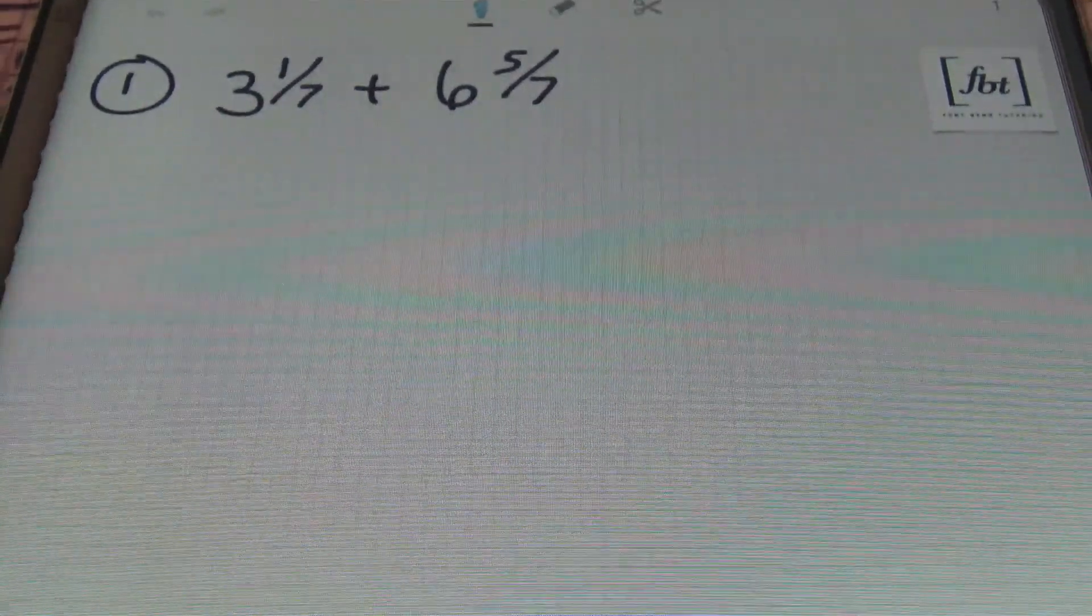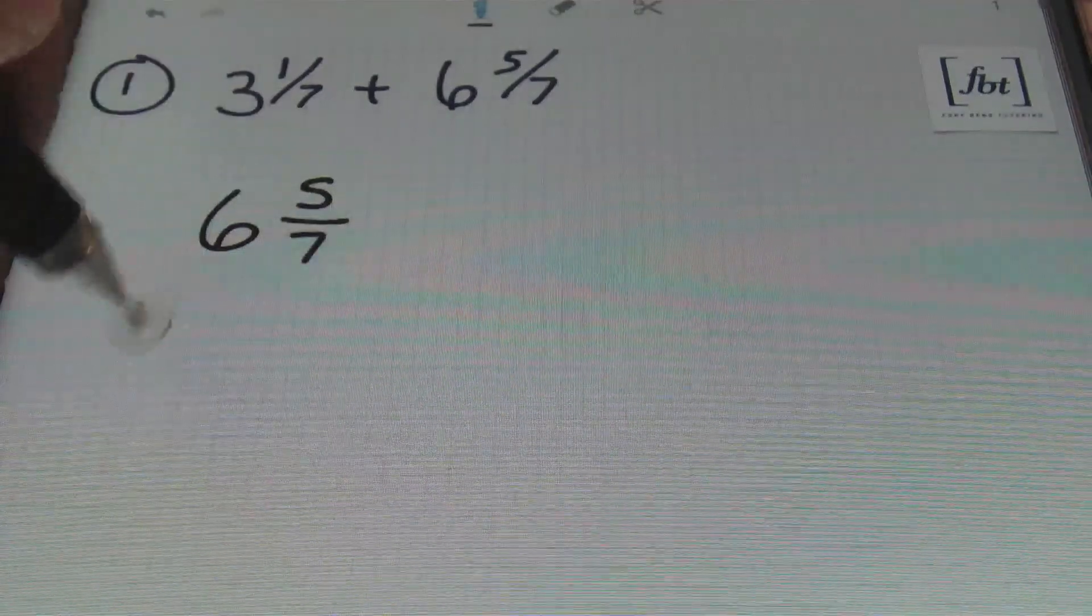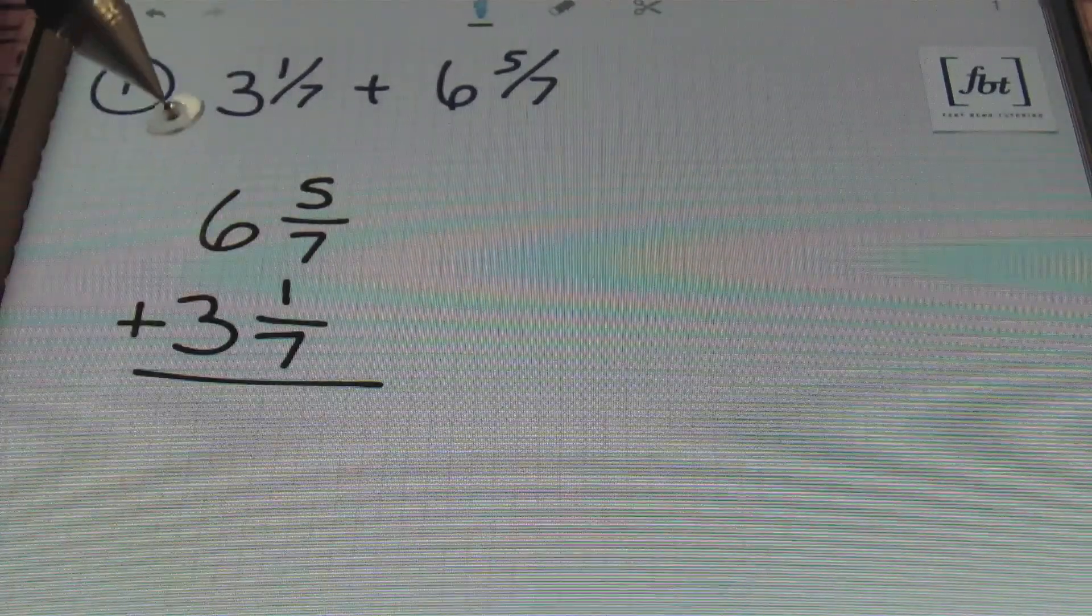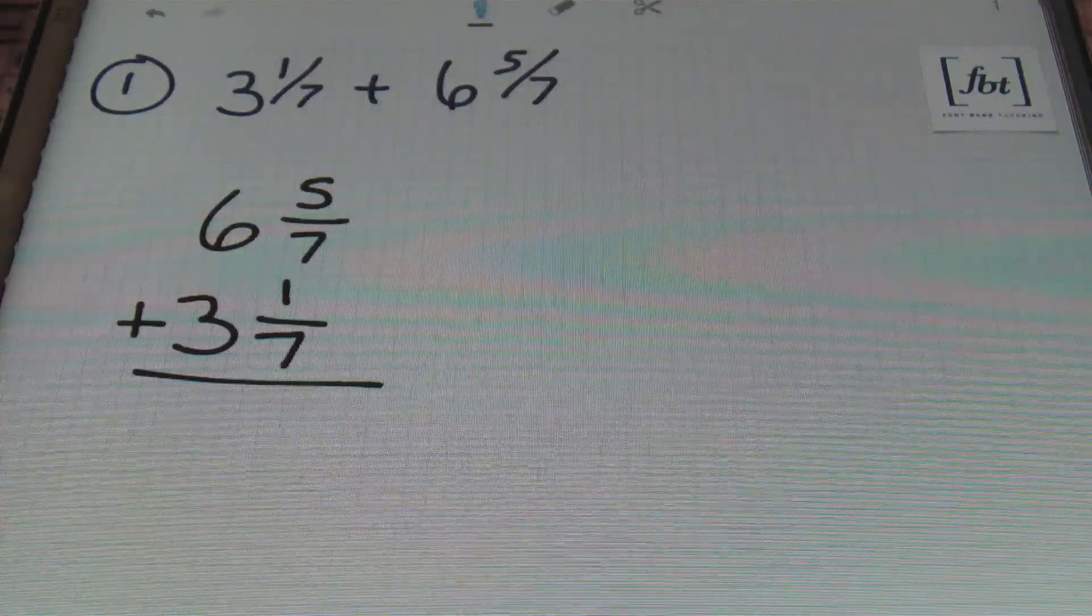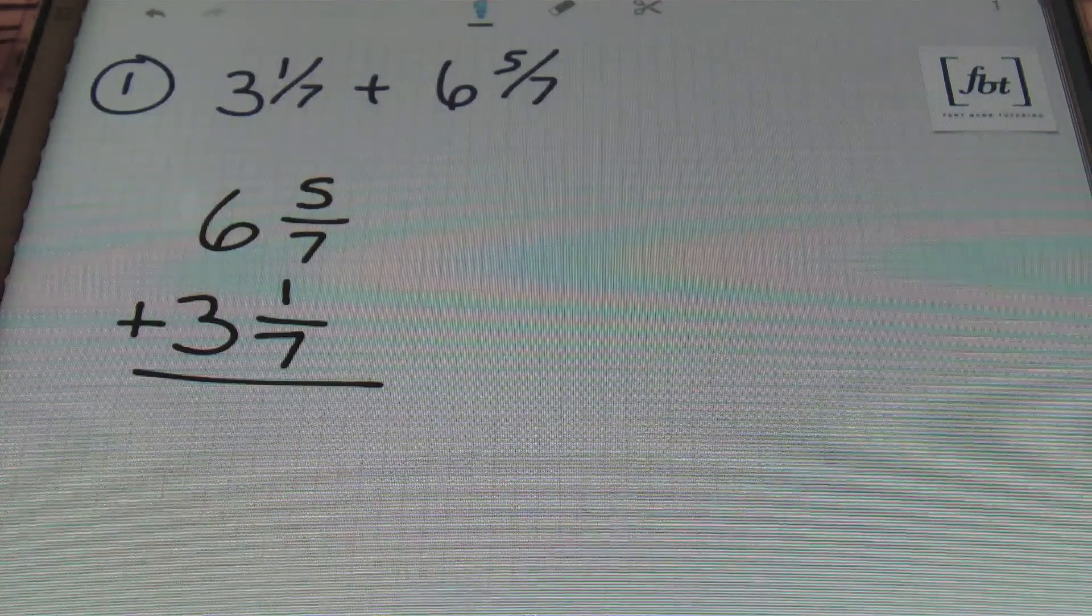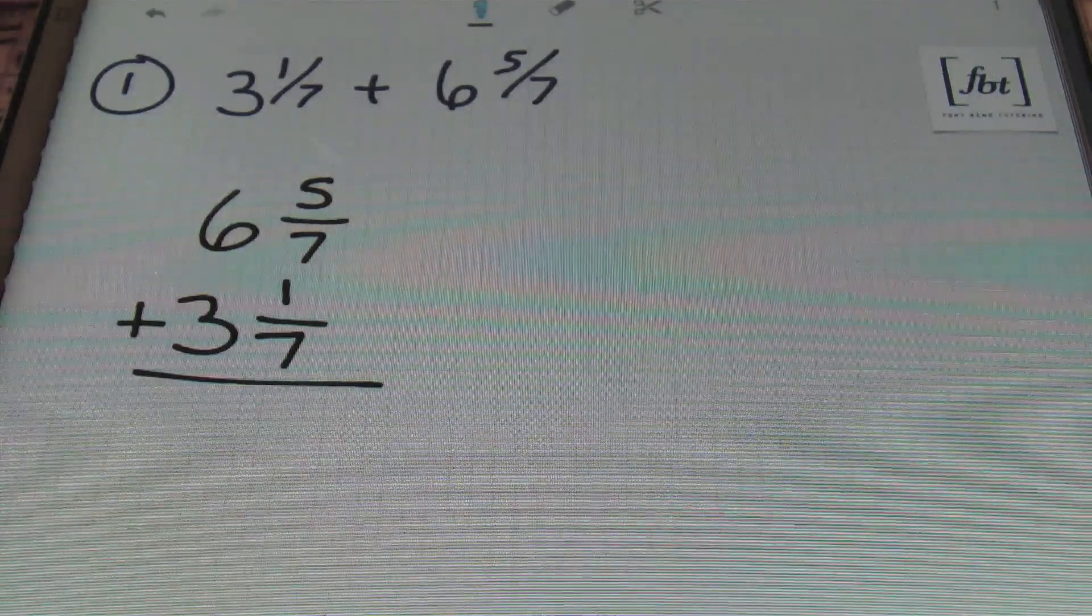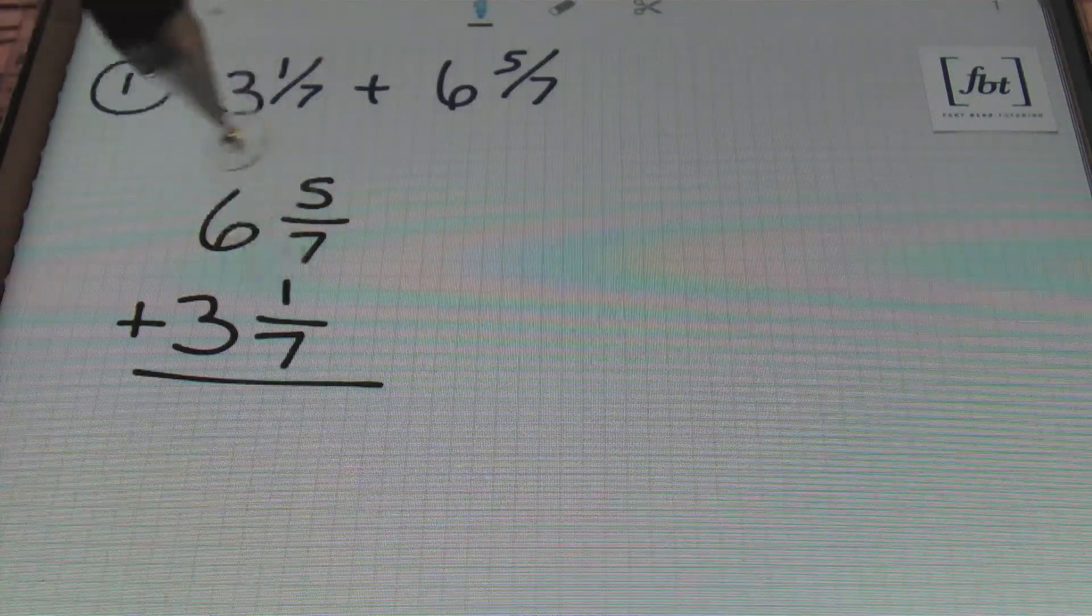No, I don't do it like that. I'm going to go ahead and rewrite this as 6 and 5/7 plus 3 and 1/7. Now you don't have to put the bigger number on top but that's just my preference. So that's what you'll see me doing in this video here. The first thing you want to pay attention to is the fractions ladies and gentlemen. The fraction part of your mixed numbers.